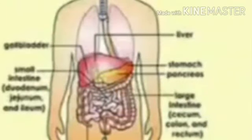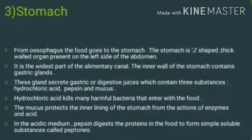This picture shows how food passes from the mouth through the food pipe, then to the stomach, then the small intestine, then the large intestine, and finally to the anus. Now about the stomach: the food goes from the esophagus into the stomach. The stomach is a J-shaped, thick-walled organ present on the left side of the abdomen.